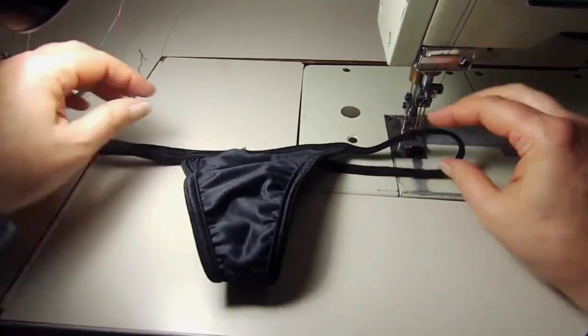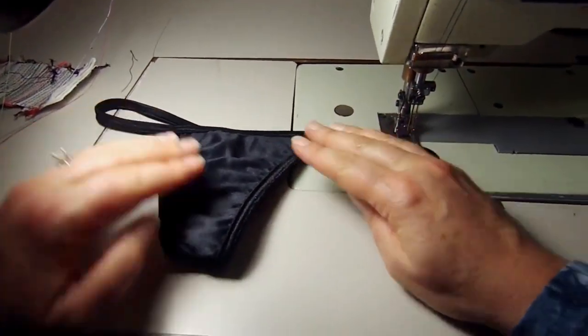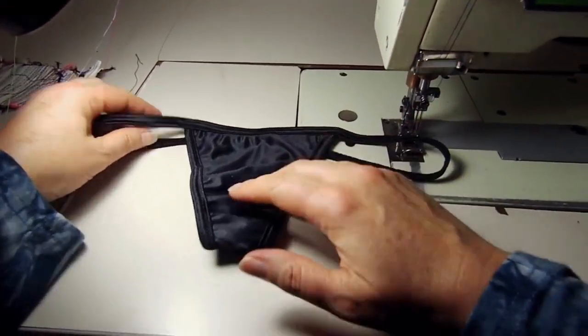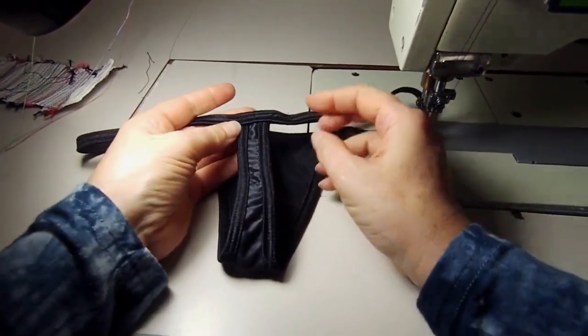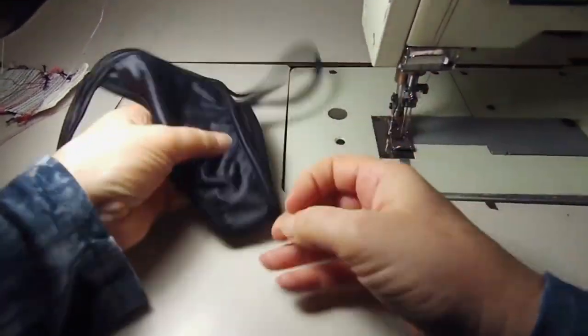So that is your completed wide thong. It has a T back. It doesn't have a Y back. There's the back of it. And there's the front.